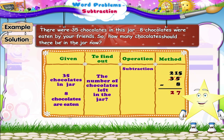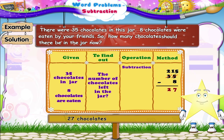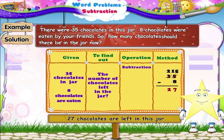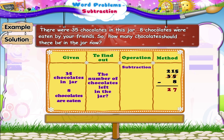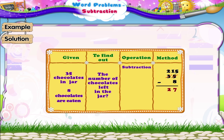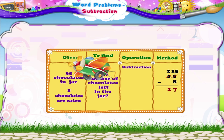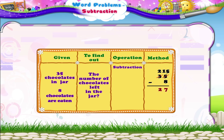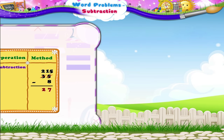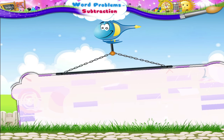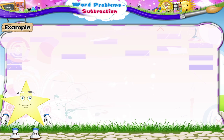So Stari, now only 27 chocolates are left in this jar. Just like addition, we can also make use of subtraction in our everyday life. Let us take a look at the next example.